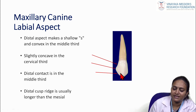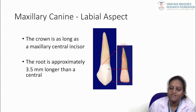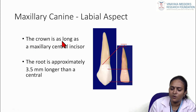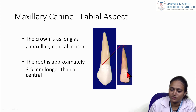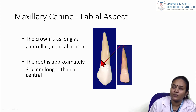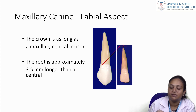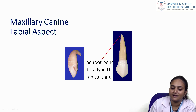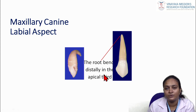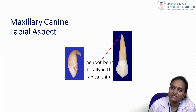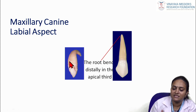The distal cusp ridge is longer than the mesial cusp ridge. The crown length is similar to the maxillary central incisors, but the root is approximately 3.5 mm longer than the central incisor — confirming that the canine has the longest root in the dentition. Occasionally, the root may be bent distally in the apical third due to developmental anomalies; this is called dilaceration.